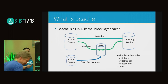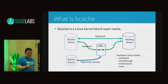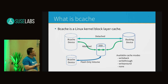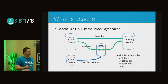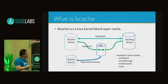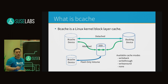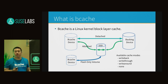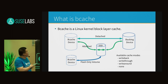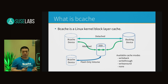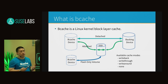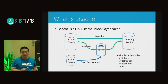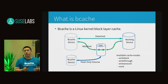bcache is a Linux kernel block layer cache. For example, there is the backend device — normally it's a hard drive — and here we have an SSD, and we accelerate the I/O by a randomly accessible SSD. Here is the bcache device. The bcache device is a GenDisk interface to be accessed from user space. It can be attached to an SSD, and also it can be accessed directly without SSD.